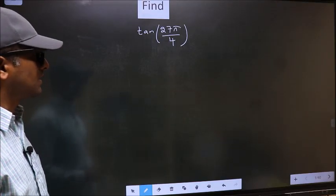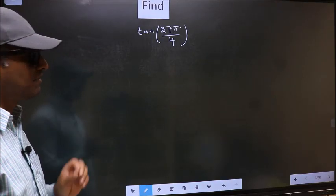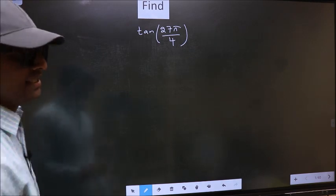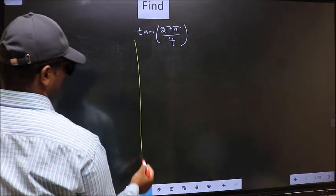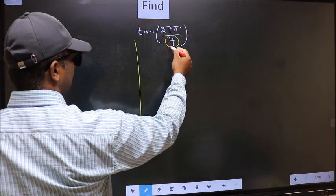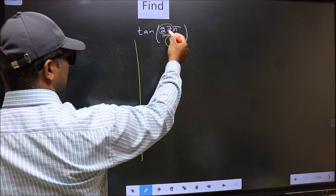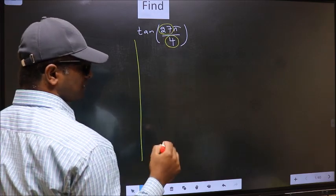Find tan 27π by 4. To find this, we should follow this method. See, in the denominator, we have 4. In the numerator, 27.